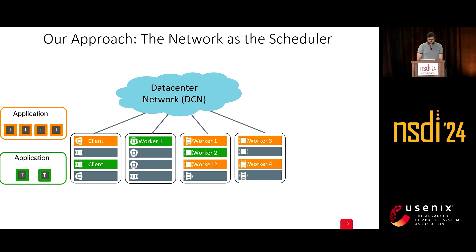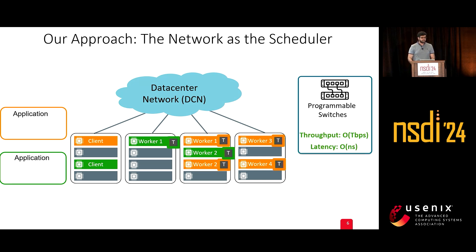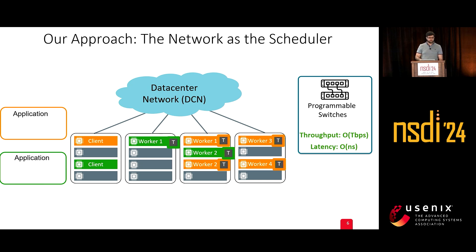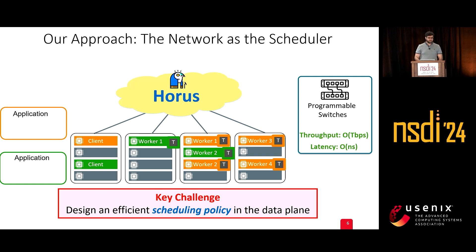Our approach is to make the network act as the scheduler. Instead of applications submitting tasks to a centralized scheduler, they submit them to distributed switches in the network. We take advantage of programmable switches that inherently run packets at very high throughput with relatively low latency. The key challenge is designing an efficient scheduling policy that runs entirely in the data plane — this system is HORUS.